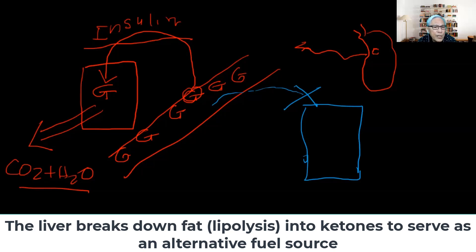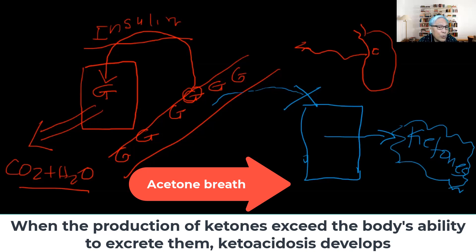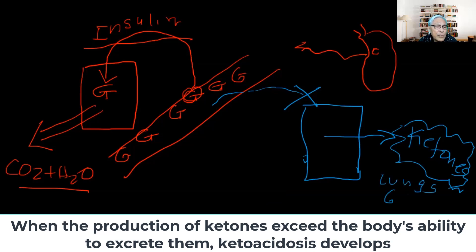When these alternative energy sources are utilized, there is going to be a production of ketones. Ketones are eliminated primarily through the GI tract, and can also be eliminated through the respiratory system. That is why patients with DKA often have what is known as acetone breath or ketone breath — because ketones can be eliminated through the lungs. However, this elimination is very slow and not efficient.